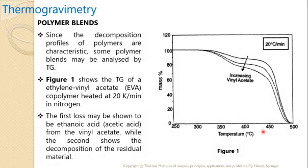The first one is polymer blends. Since the decomposition profile of the polymer is characteristic, some polymer blends may be analyzed using the thermogravimetry technique. Figure 1 shows the TGA of ethylene vinyl acetate, which is one of the polymer blends — a mixing of two polymers, ethylene and vinyl. These two polymers make an ethylene vinyl acetate copolymer, heated at a temperature rate of 20 Kelvin per minute in nitrogen atmosphere.